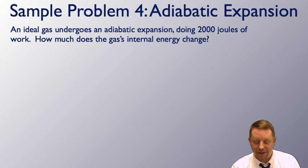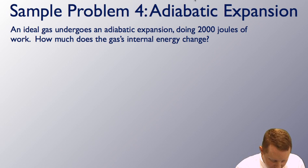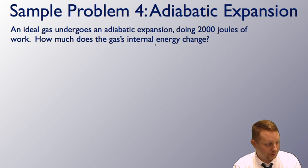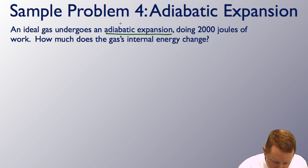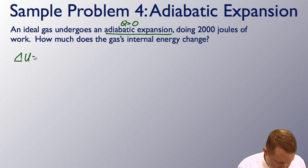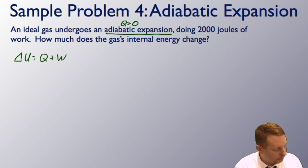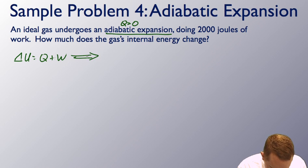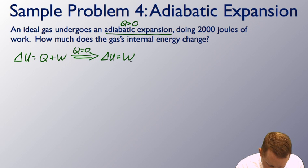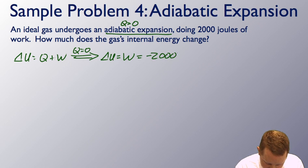Adiabatic expansion sample problem: an ideal gas undergoes an adiabatic expansion doing 2,000 joules of work. How much does the gas's internal energy change? Since it's adiabatic, Q equals zero. The change in internal energy equals Q plus W, and since Q is zero, delta U equals the work done on the system. Because the gas is doing 2,000 joules of work, W on the system is negative 2,000 joules, so delta U equals negative 2,000 joules.